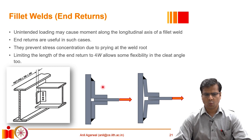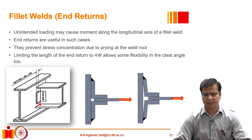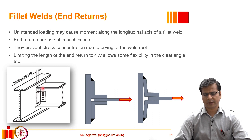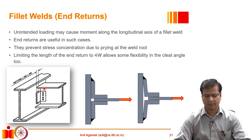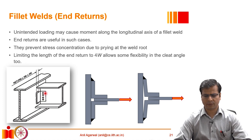However, there are situations where we may actually want to continue the weld slightly farther before terminating it. Such a situation is called an end return. This type of weld is particularly useful in the following example: a beam connected to a girder through a cleat angle — a single or double angle connection — where both angles are welded to the girder web and bolted to the beam web.